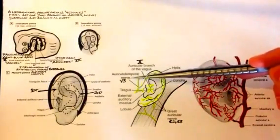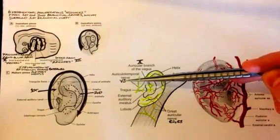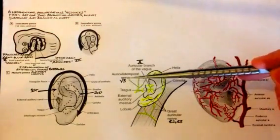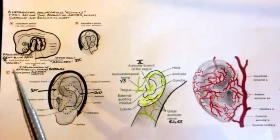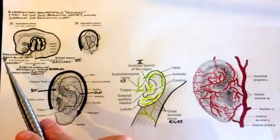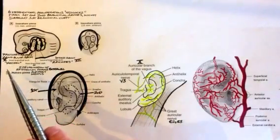The auriculotemporal nerve is a branch of the trigeminal, it's V3. That makes sense embryologically, right? Remember it's from the mandibular arch, which is the trigeminal nerve that's associated with that first branchial arch.